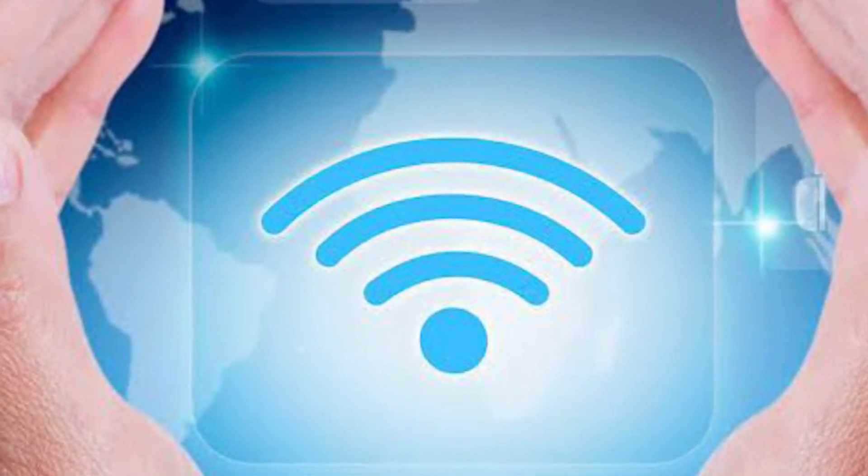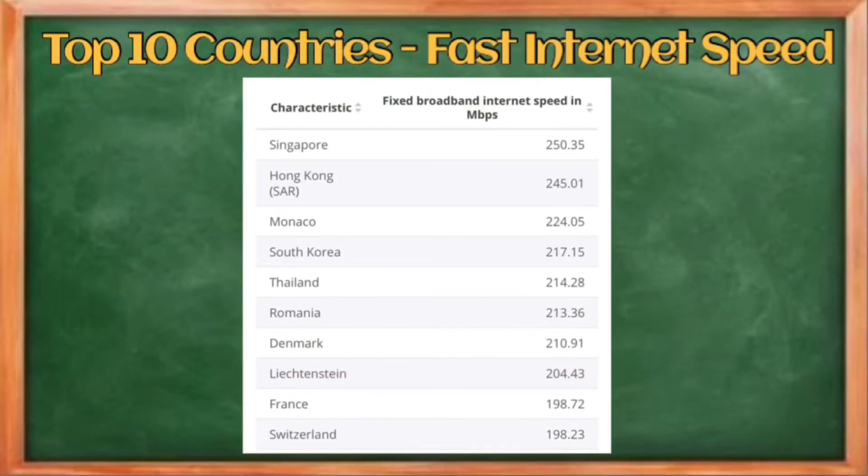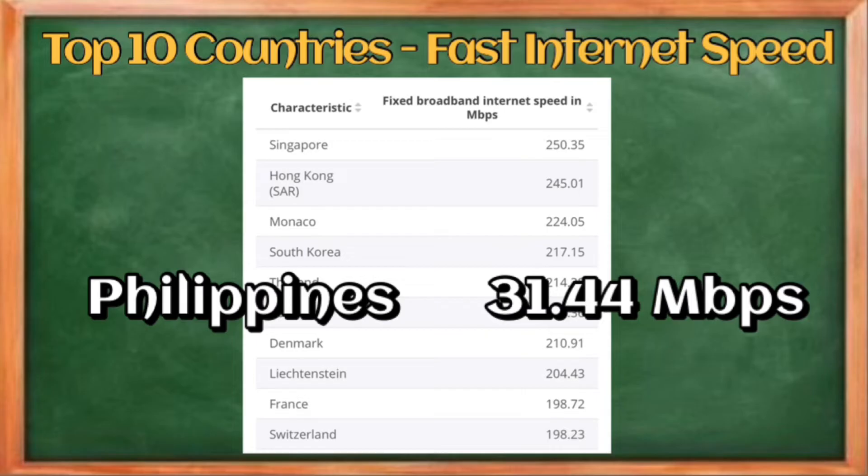However, having internet is not enough—it should be fast and at the same time reliable. According to worldpopulationreview.com, here are the top 10 countries with a fast internet speed. Singapore is the nation with the fastest broadband speed. Internet speed in this country is 250.35 Mbps. In the Philippines, which is on the 92nd rank, we have an average of 31.44 Mbps.